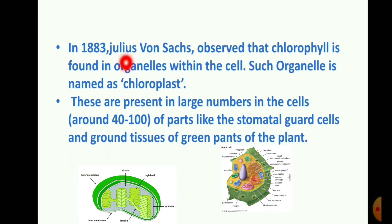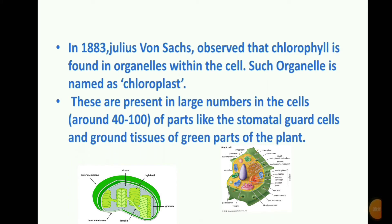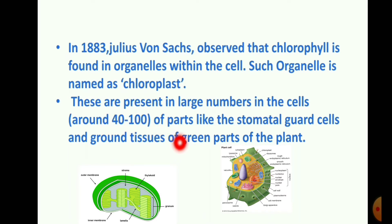Chloroplast and chlorophyll are found in the cell. These are present in large numbers in cells — around 40 to 100 — in parts like the stomatal guard cells and ground tissues of green parts of the plant.